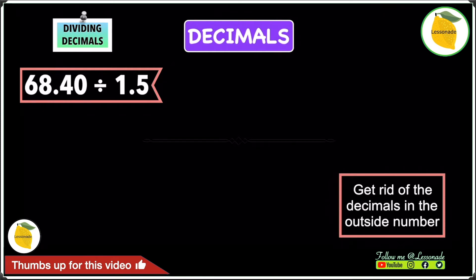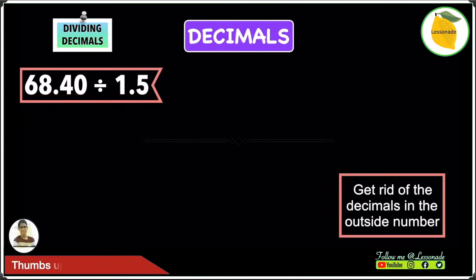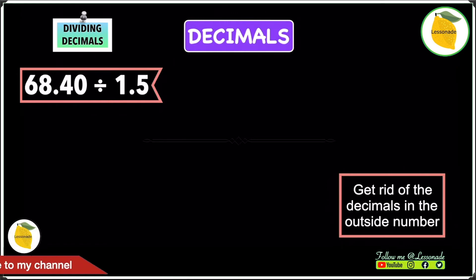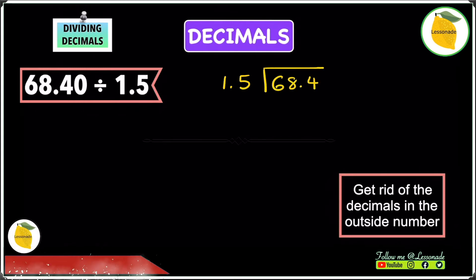Let's have a look at another example: 68.40 divided by 1.5. Start by arranging these numbers as you would with any division — write 1.5 on the outside and 68.40 on the inside.